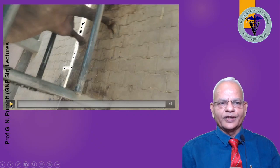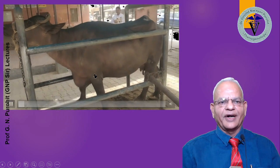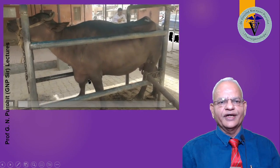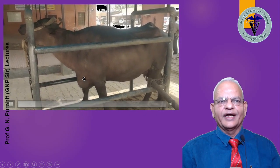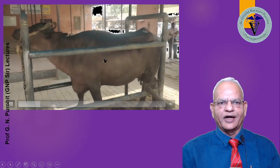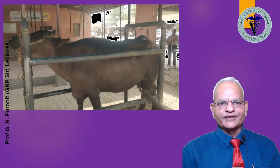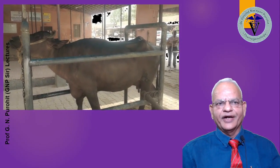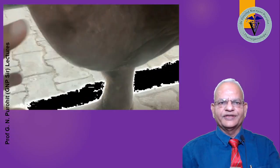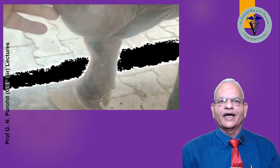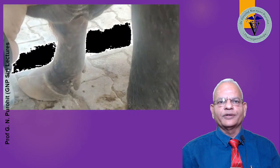Now I will show you a small clip of a buffalo suffering from traumatic pericarditis. You can see here there is a huge brisket edema. The animal is off feed and it has an arched back. This buffalo has a decrease in milk yield, rumination has been decreased, and you can see the edema on the brisket — when we apply pressure on the brisket, it pits on pressure.